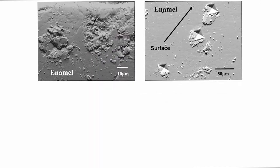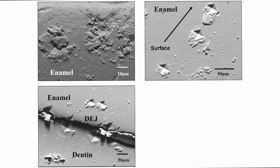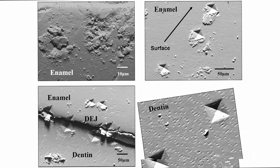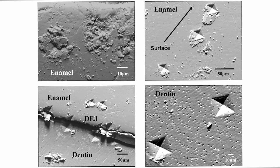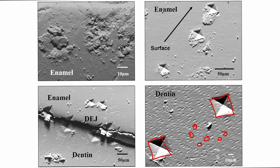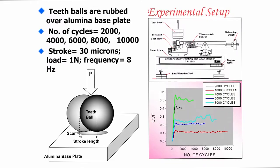You can see how these indents appear at the dentine-enamel junction, in the enamel part, and in the dentine part — where you have small micro-tubules — and there are very clear, well-distinct Vickers hardness impressions in the dentine part as well.